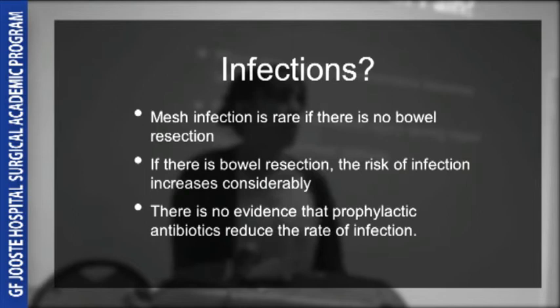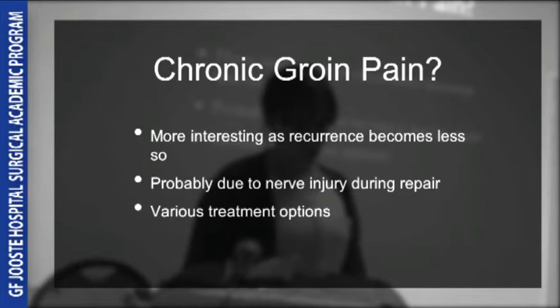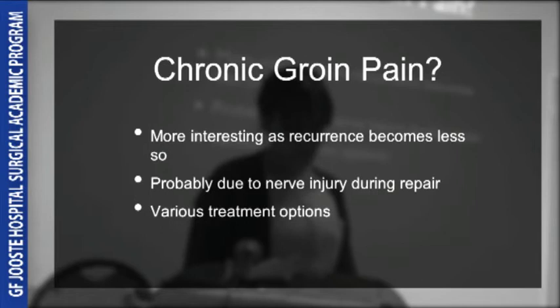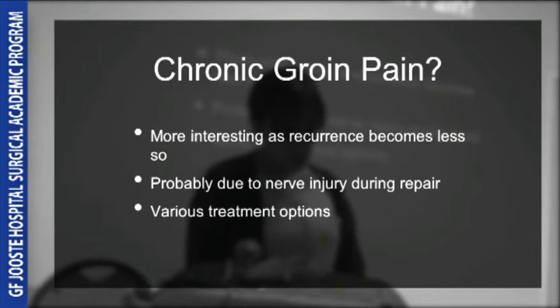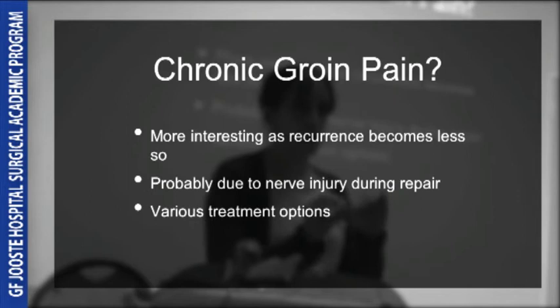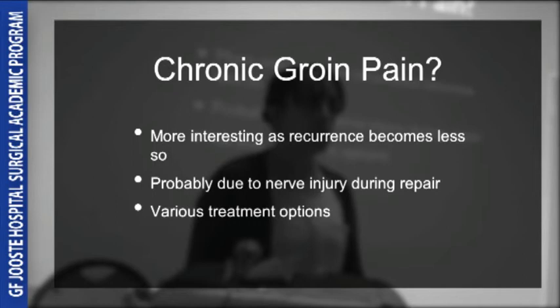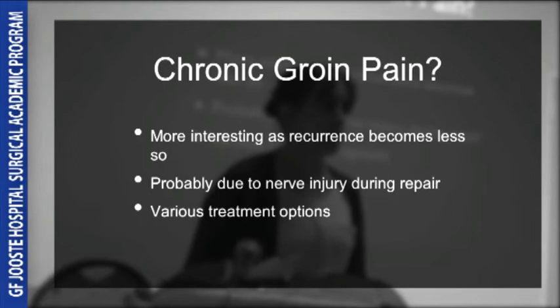As hernia recurrence becomes more negligible, the new hot topic is chronic inguinodynia. Some studies suggest that chronic groin pain after hernia repair may be as high as 53%, and may be caused by neuroma formation after damage during surgery or by entrapment of a nerve by suture or a tack. Mesh has not been shown to make any difference to groin pain. Treatment options range from simple analgesia to pain clinic referral and regional block, and some advocate neurectomy where all the nerves are cut and their stumps buried. A big risk factor for chronic post-operative groin pain is pre-operative groin pain.